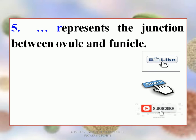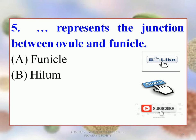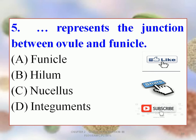Now the fifth question: dash represents the junction between the ovule and funicle. Options are A. Funicle, B. Hilum, C. Nucleus, D. Integuments. The correct option is B — Hilum. Yes, the hilum is the junction between the ovule and the funicle.